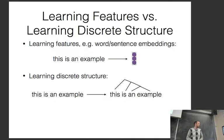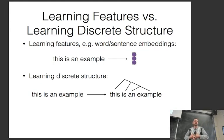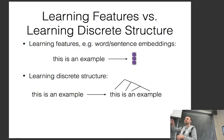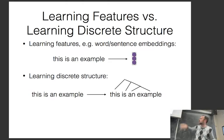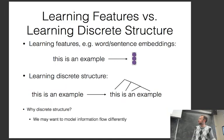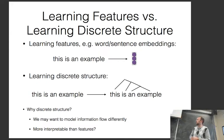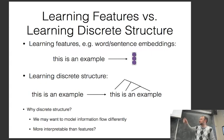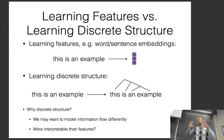Learning discrete structure, on the other hand, means taking an English sentence and learning some structure over it — to actually analyze it. There are two reasons to want discrete structure: first, to model information flow differently, for example using a tree-structured neural network. Second, structures are more interpretable — you can look at a parse tree and see something about the phrase structure of the sentence.